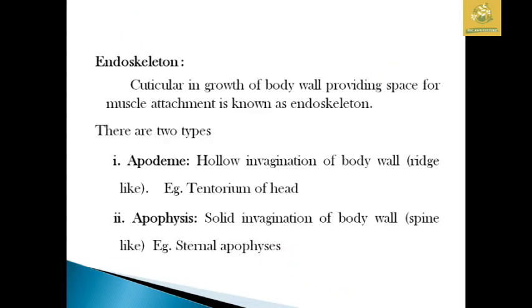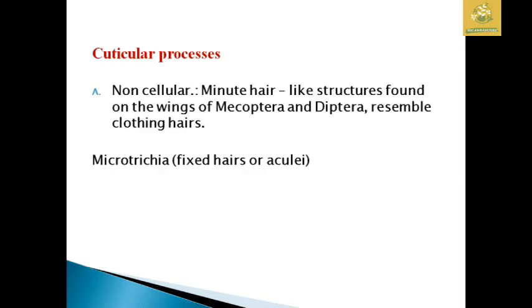Next is the endoskeleton, which is a cuticle in-growth of the body wall providing space for muscular attachment. It forms a bond between the outer layer and inner tissues. There are two types of endoskeleton: the apodeme, which is a hollow invagination of the body wall — rigid in form, for example the tentorium of the head — and the apophysis, which is a solid invagination forming spine-like structures, for example the sternal apophysis.